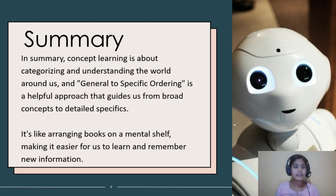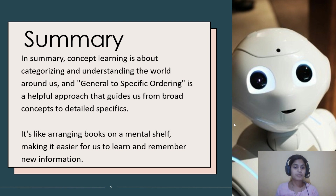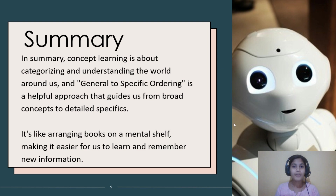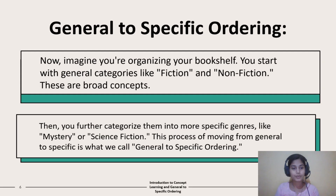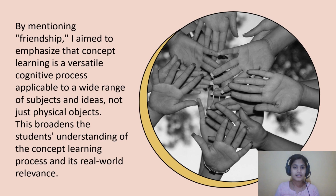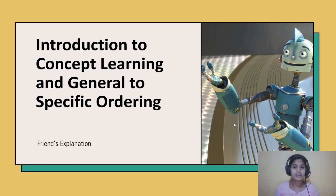Summary: concept learning is about categorizing and understanding the world around us, and general to specific ordering is a helpful approach that guides us from broad concepts to detailed specifics. It's like arranging books on a mental shelf, making it easier for us to learn and remember new information. I hope you have understood everything explained in this video — these are things you often see in your real life also.